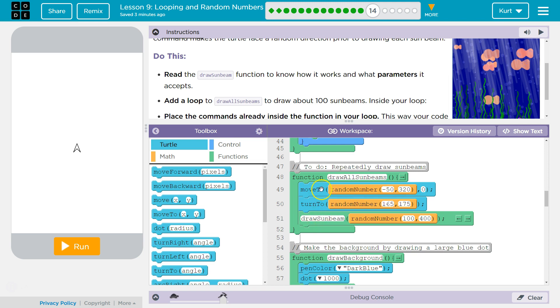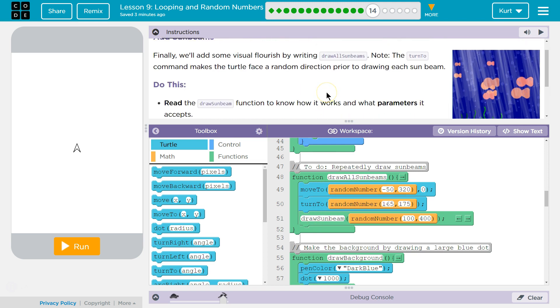We're going to move to draw sunbeams turn2. So we're going to move to a random position. We're going to turn to a random position between negative 50 and 320, 0y. So 0y is the top. And then we're going to turn it to a random position, which is I guess why the light's different angles. And then we run the draw sunbeam function.